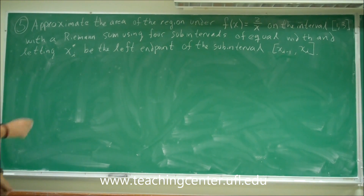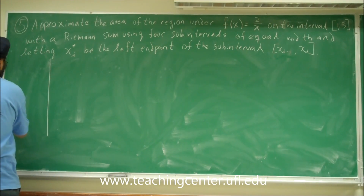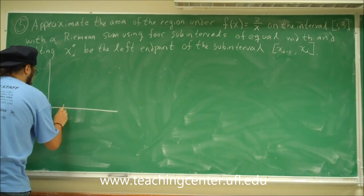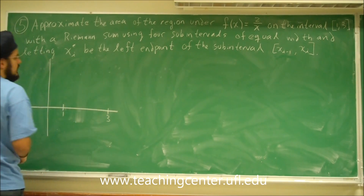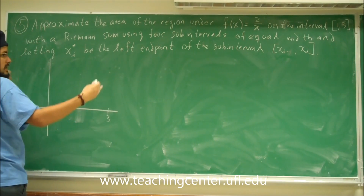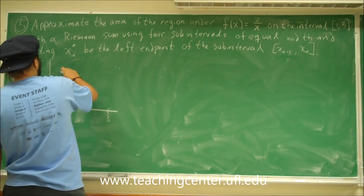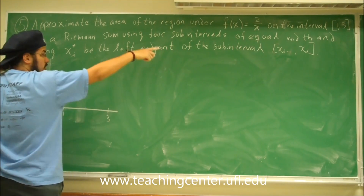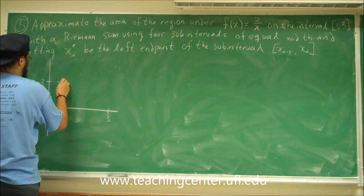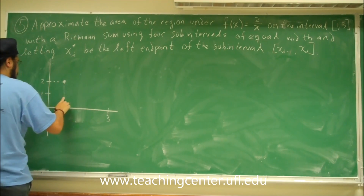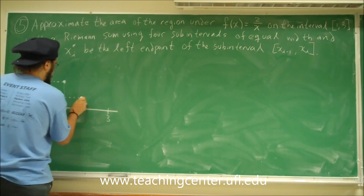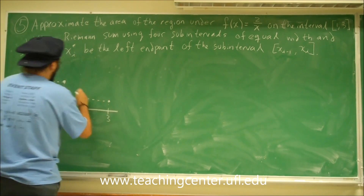Let's look at 2 divided by x visually. So 2/x from 1 to 3 — here's 1 and here's 3. 2/x is 2 times 1/x, and 1/x looks like this. The 2 just means you are compressing it horizontally. If you plug in 1 for x you get 2, and if you plug in 3 for x you get 2/3, so it goes something like this.